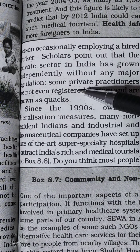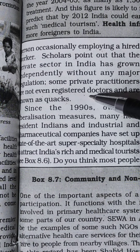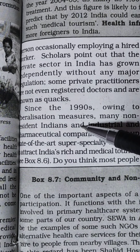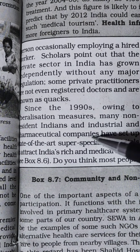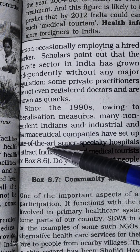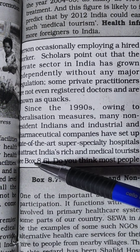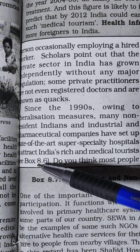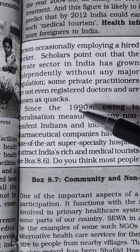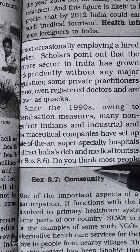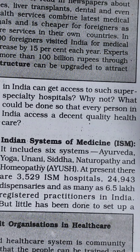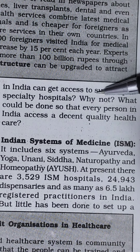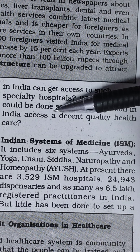Scholars point out that the private sector in India has grown independently without any major regulation. Some private practitioners are not even registered doctors and are known as quacks. Since the 1990s, owing to liberalization measures, many non-resident Indians and industrial and pharmaceutical companies have set up state-of-the-art super speciality hospitals that attract India's rich and medical tourists. The question arises: can most people in India access such super speciality hospitals, and what could be done so that every person accesses decent quality health care?